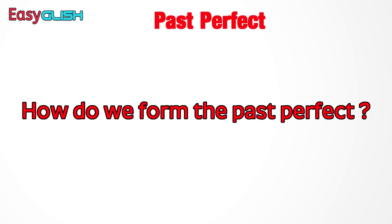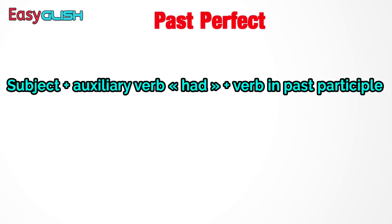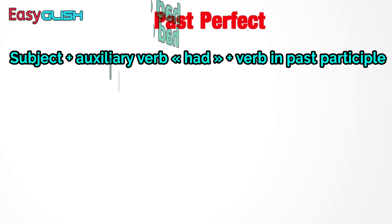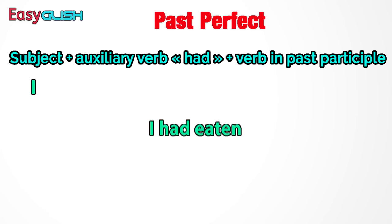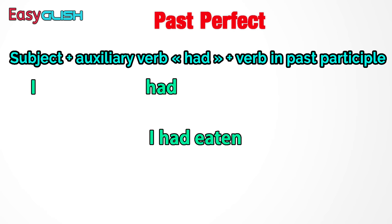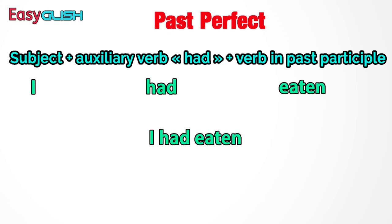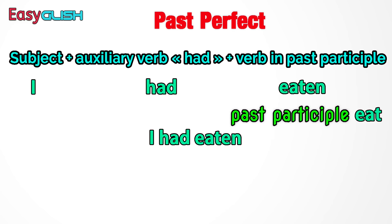How do we form the past perfect? The structure of the past perfect tense is: subject plus auxiliary verb — يعني 'had' — plus verb in past participle. For example: 'I had eaten.' عدنا subject اللي هو 'I'، عدنا 'had' اللي هو الأكزيليري، وعدنا 'eaten' اللي هو الـ past participle ديال 'eat.'